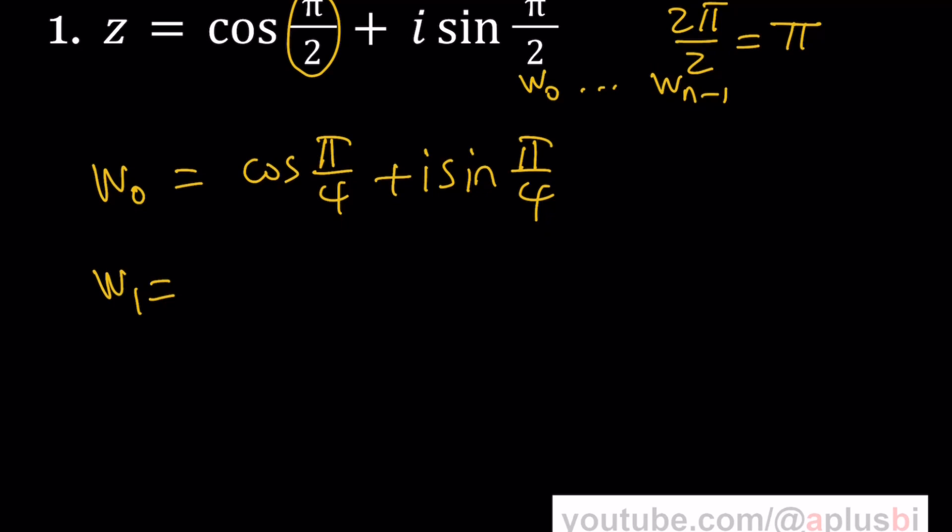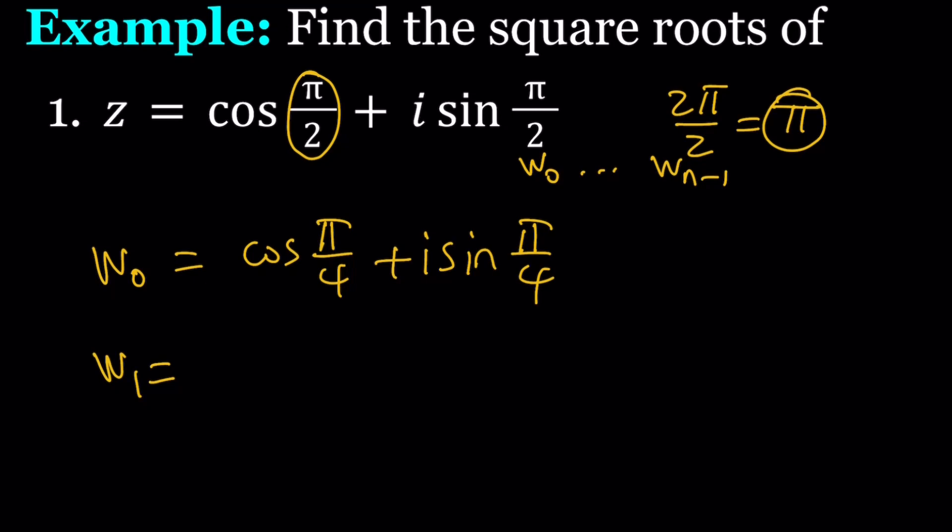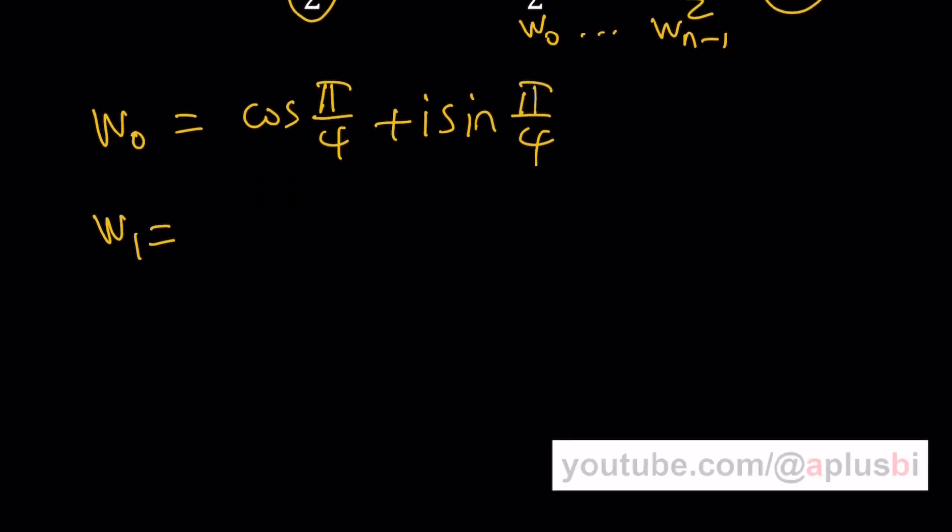To find the second one, here's what you need to do. Remember, we said that they're going to be pi radians apart. So to find the next one, you're going to add pi to this angle, which is half of 2 pi, because you're finding square roots. And when you add pi to this, it's going to be 5 pi over 4. And of course, it's going to be the same again. And those are going to be the roots. If you know these values, you can replace them. For example, the first one is going to be root 2 over 2 plus root 2 over 2i. And you can do the second one.